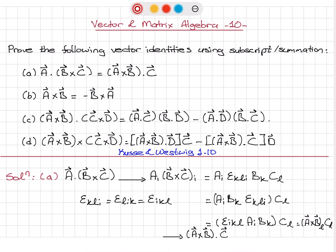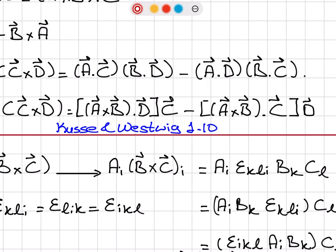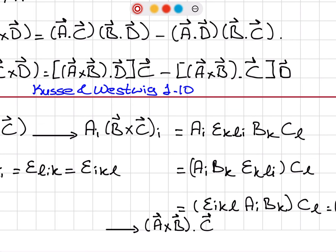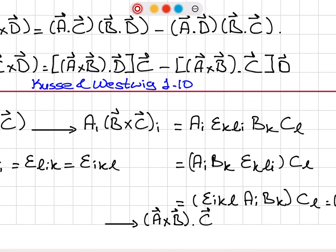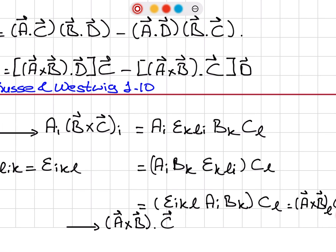To recap: the dot product of two vectors A·(B×C) equals A_I times the I-component of B cross C. The I-component of B cross C is epsilon_KLI B_K C_L. That gives A_I B_K epsilon_KLI C_L. Using cyclic permutations, epsilon_KLI equals epsilon_IKL, so epsilon_IKL A_I B_K gives the L-component of A cross B multiplied by C_L — summing over the repeated L index — which gives (A cross B)·C.